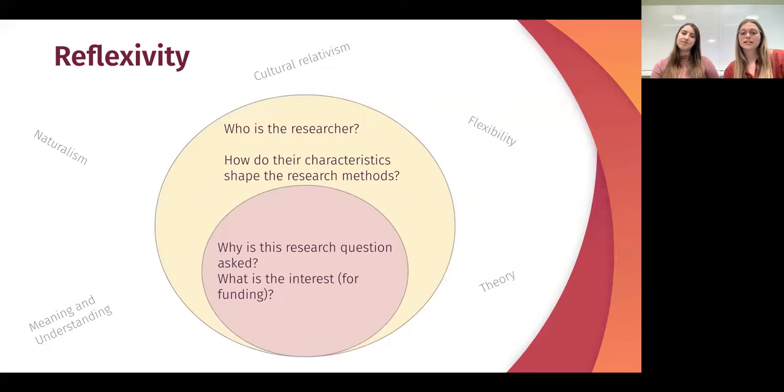It consists of two different dimensions where the first dimension is about the research question and why this specific research question can be asked at the moment. What are the different interests in this research question? How do your affiliations influence this, where is the funding coming from, and why is a certain project attracting funding?